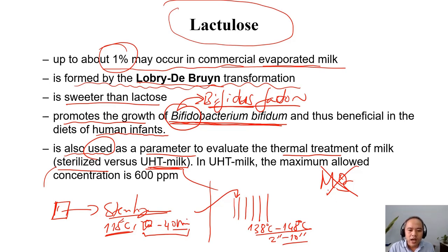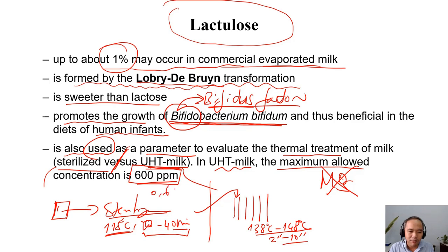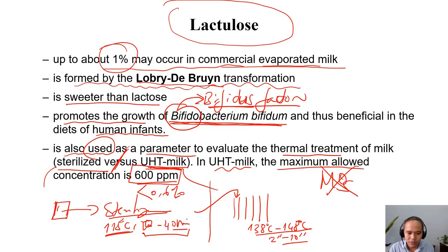People can use lactulose content to differentiate between normal sterilized and UHT milk. In UHT milk, the maximum allowed concentration of lactulose is 600 ppm, or 0.6%. UHT milk should have less than 0.6% lactulose, while normal sterilized milk can have higher than 0.6%. This is because UHT treatment has less impact on nutrients, so there is less isomerization of lactose into lactulose. The regulation requiring lower lactulose in UHT milk is not because lactulose is toxic — it is simply to ensure that UHT milk has not been subjected to excessive heat impact on nutrients.